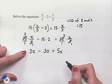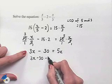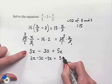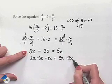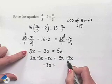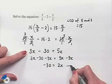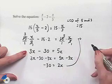3x minus 30 minus 3x equals 5x minus 3x. On the left hand side, we're left with negative 30. On the right hand side, we have 5x minus 3x, which is 2x.